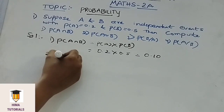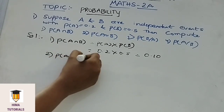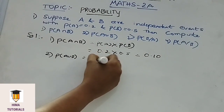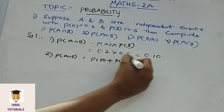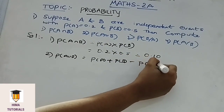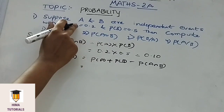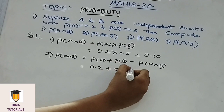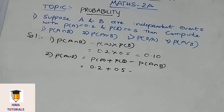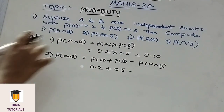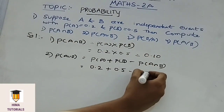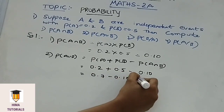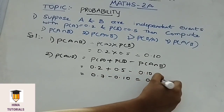Now for P of A union B, the formula is P of A plus P of B minus P of A intersection B. P of A is 0.2 and P of B is 0.5, and we already found P of A intersection B is 0.10. So 0.2 plus 0.5 minus 0.10 gives 0.7 minus 0.10, that means 0.60.